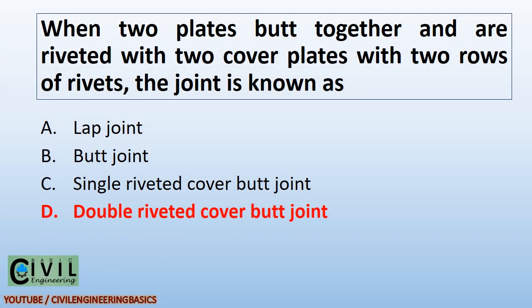When two plates butt together and are riveted with two cover plates with two rows of rivets, the joint is known as double riveted cover butt joint.